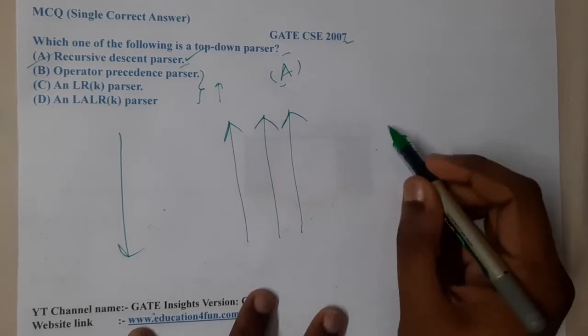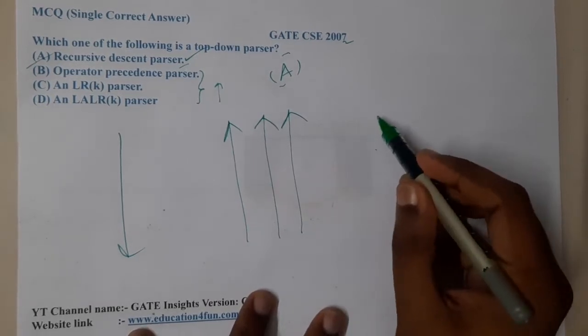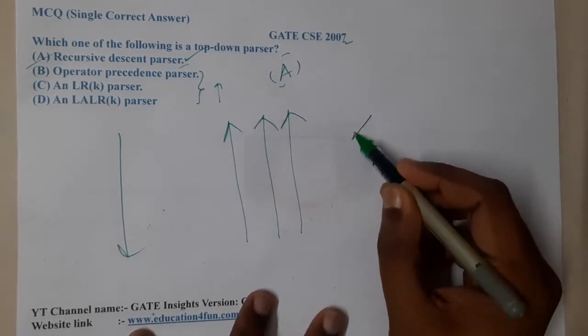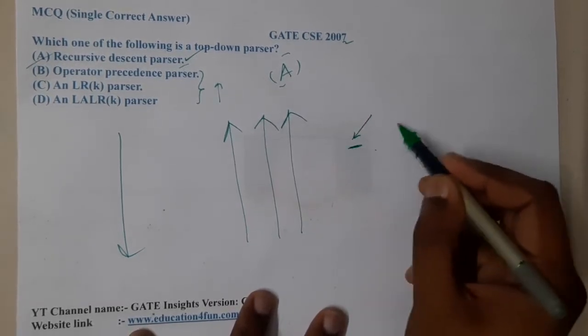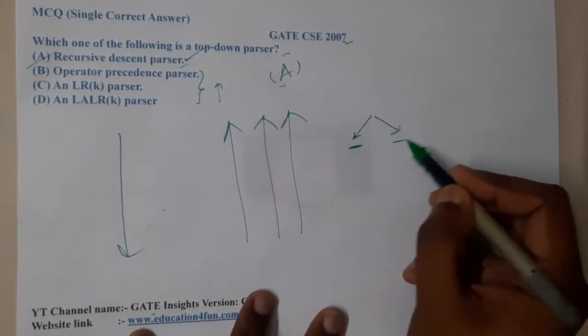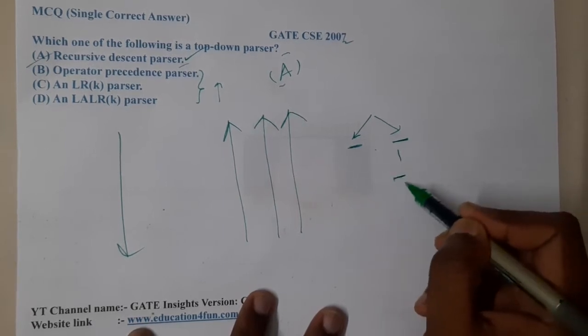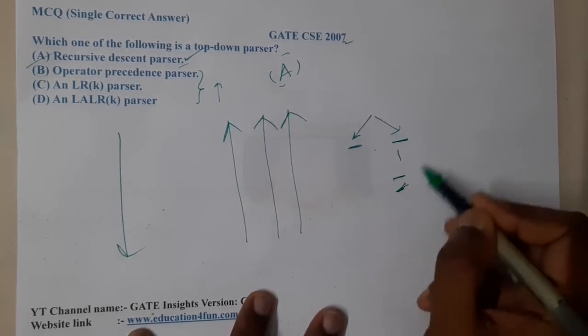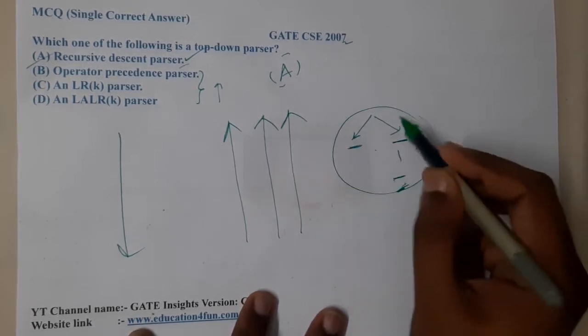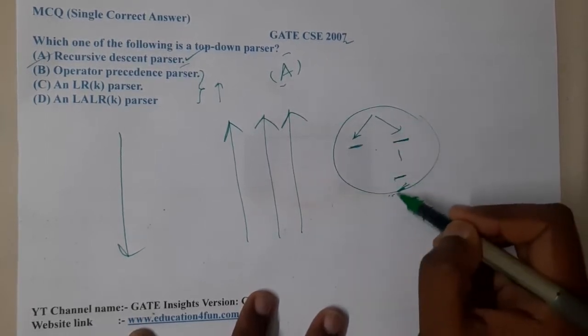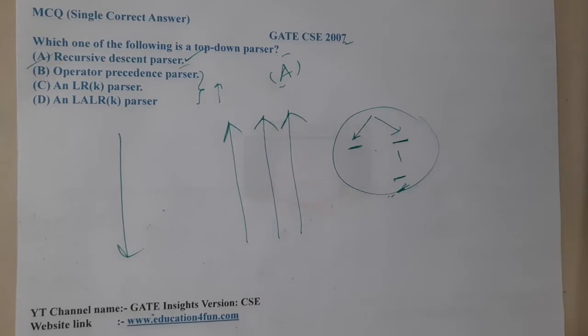If you want some other names for top-down parsers, you can call them recursive descent parsers, predictive parsers, or LL(1) parsers. These are the three names to be clear.